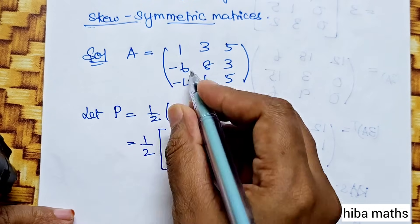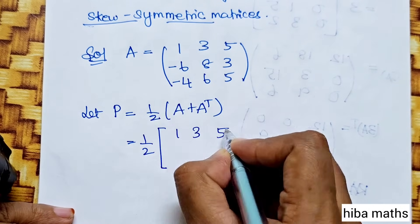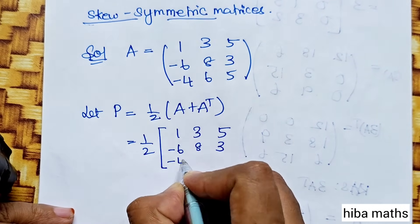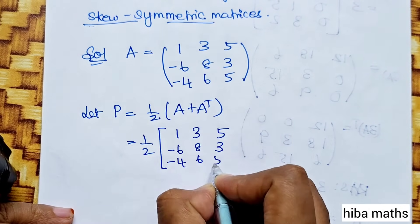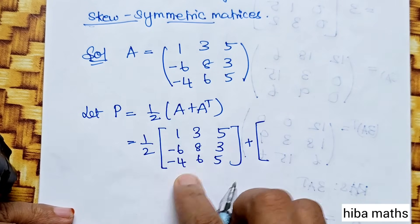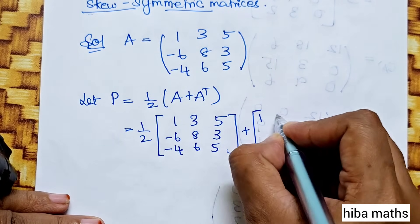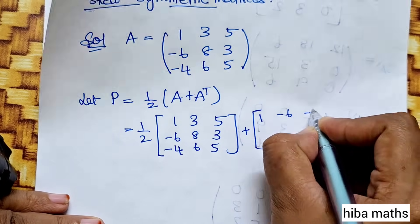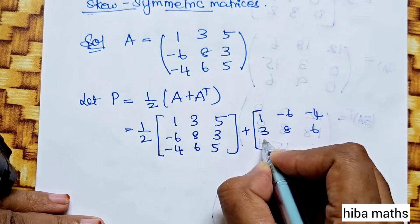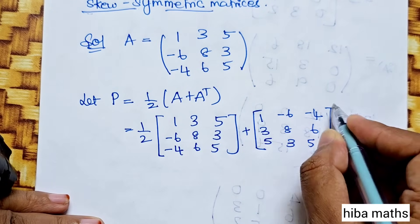So, 1 by 2 times the A matrix [1, 3, 5; -6, 8, 3; -4, 6, 5] plus A transpose. In A transpose, we reverse rows and columns: [1, -6, -4; 3, 8, 6; 5, 3, 5].